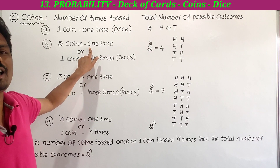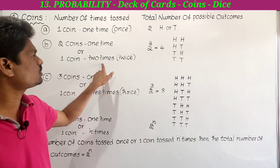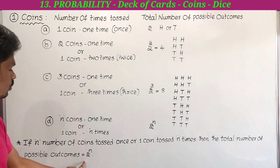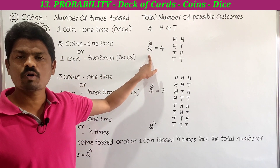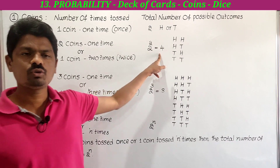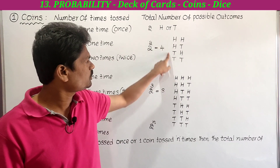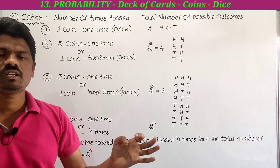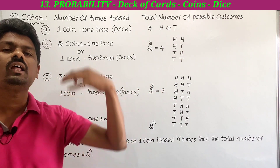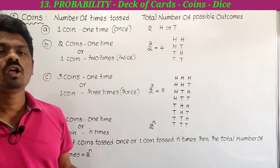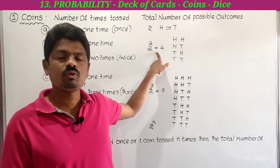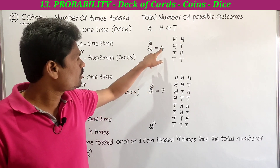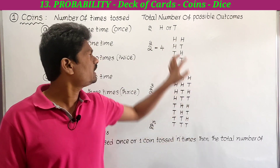If two coins are tossed one time, or one coin is tossed two times (twice), then n equals 2. So it becomes 2 to the power 2, which is 2 into 2 equals 4. So 4 is the total number of possible outcomes.